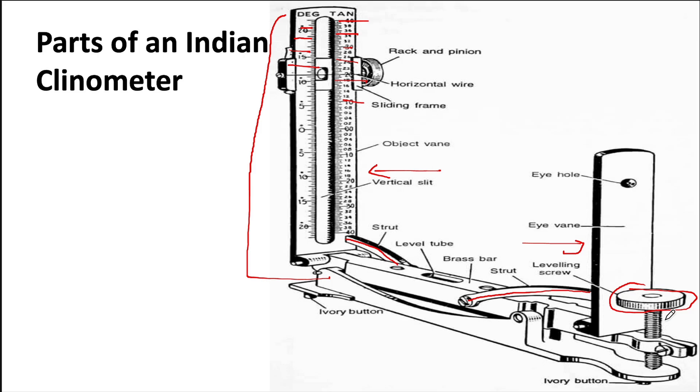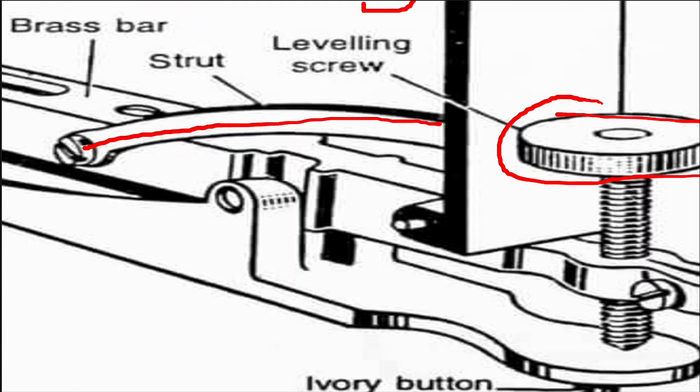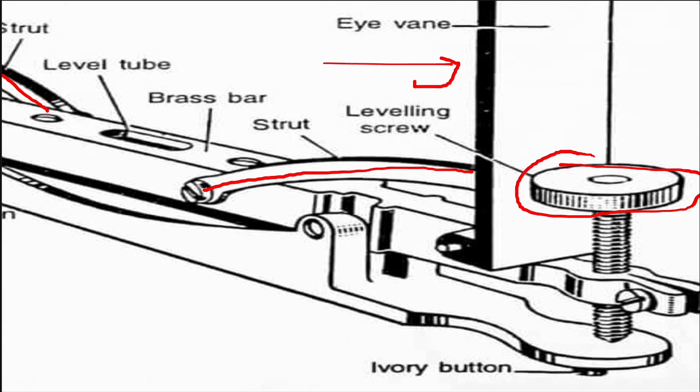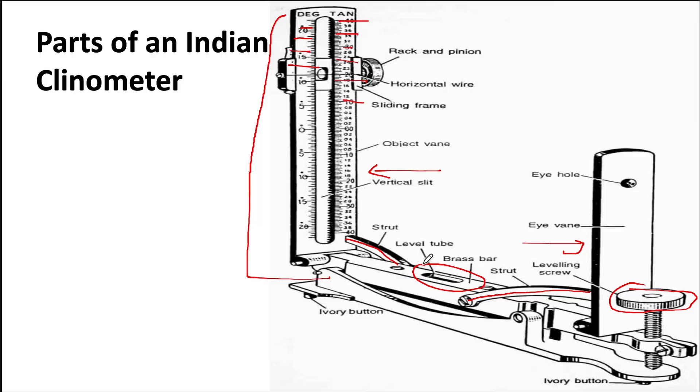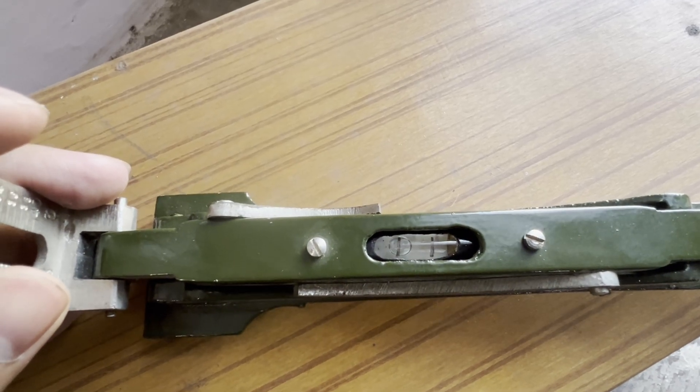It also has a leveling screw which helps adjust the final level of the Indian Clinometer with respect to gravity. The Clinometer also consists of a spirit bubble to help level the instrument.